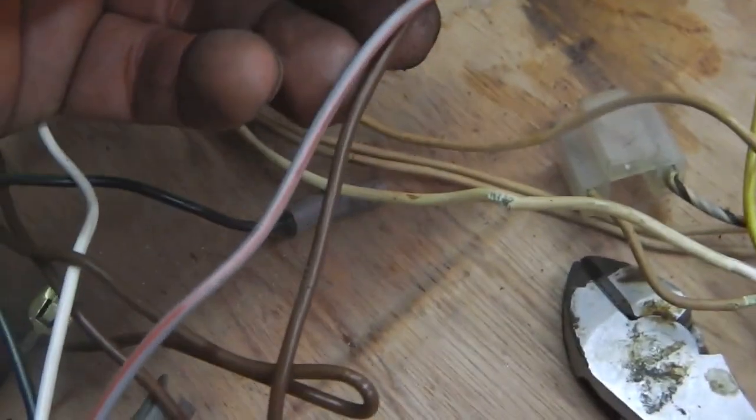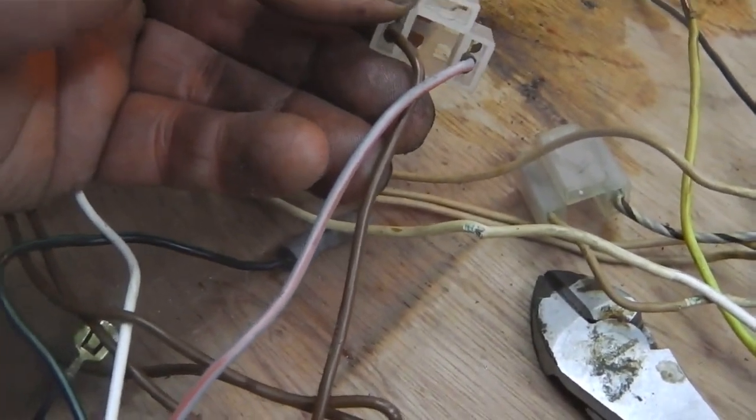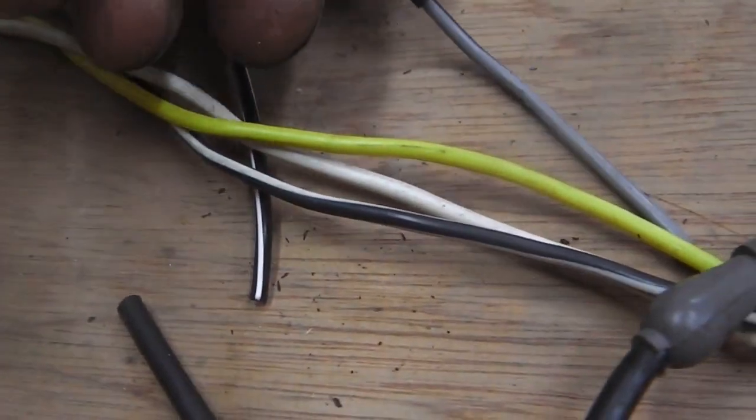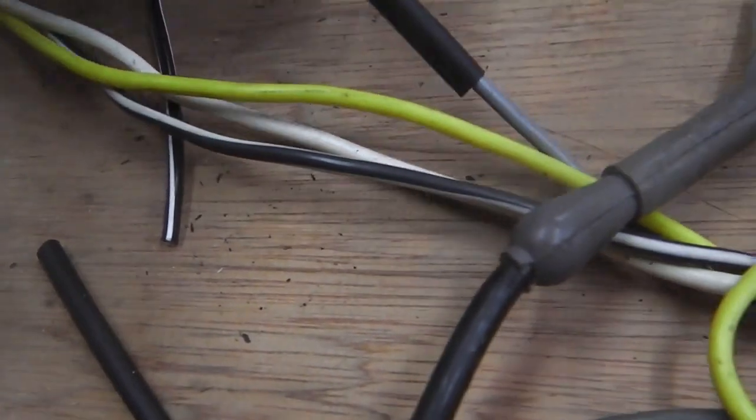I'll just do that operation for you now. We're slowly, one by one, swapping the wires across. Splicing in the sidelight cable. Heat shrink on first, slide it right back so it doesn't get distorted by the solder. Then we need to bare these ends now and connect up.